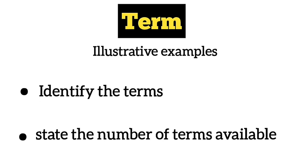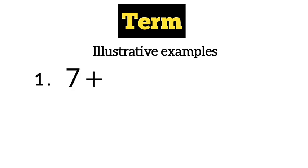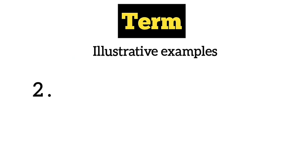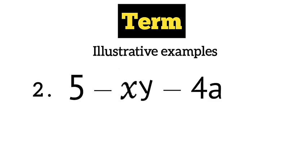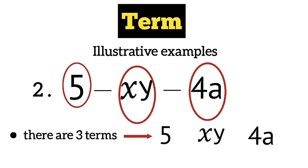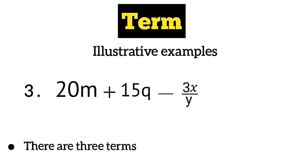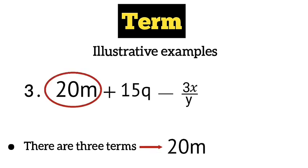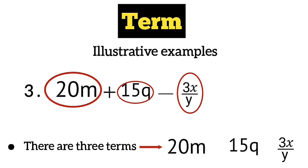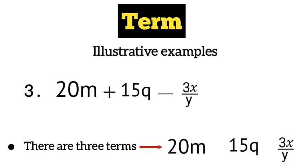Let's take examples of expressions and identify their terms and the number of terms. The first expression is 7 plus x — there are two terms: 7 and x, since they are separated by the addition sign. The second expression is 5 minus xy minus 4a — there are three terms: 5, xy, and 4a, separated by subtraction signs. The third expression is 20m plus 15q minus 3x over y — there are also three terms: 20m, 15q, and 3x over y, separated by addition and subtraction signs.